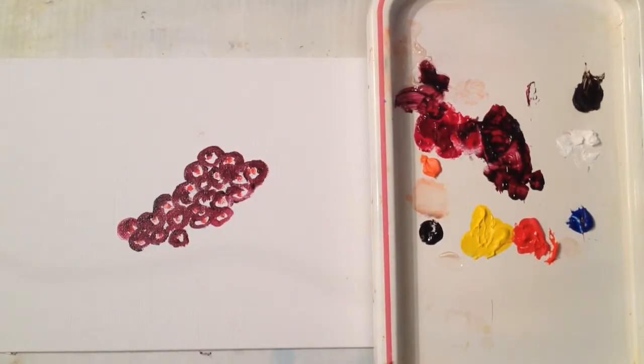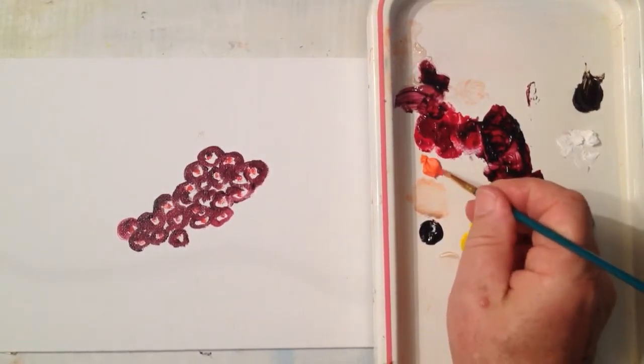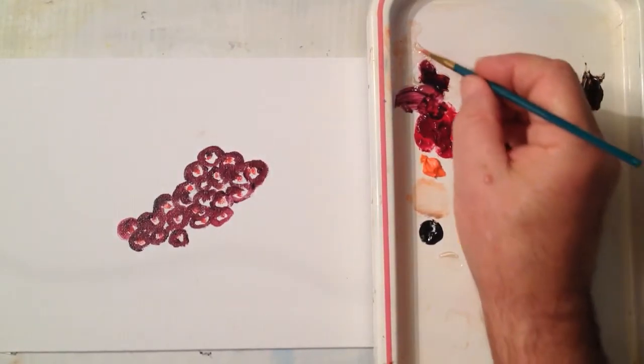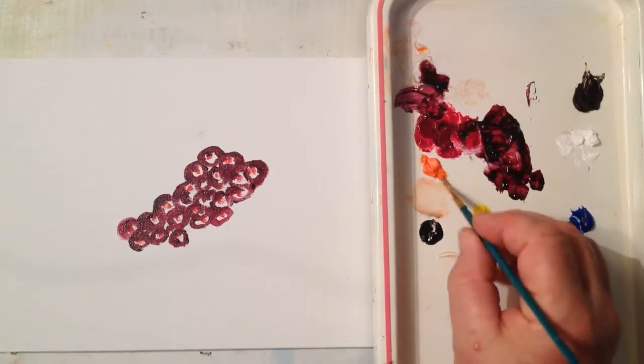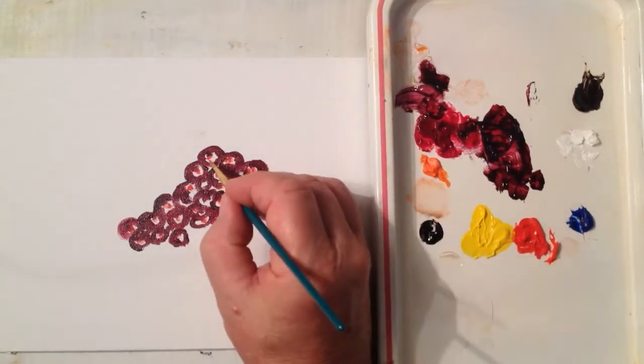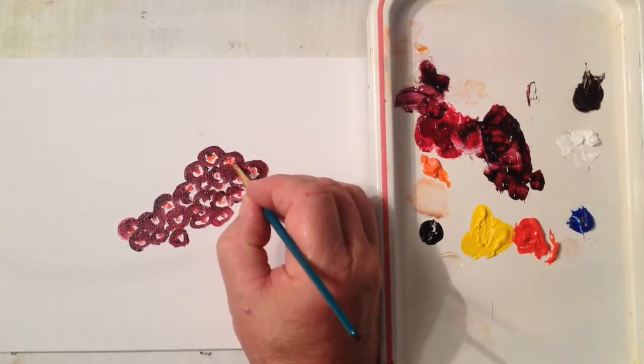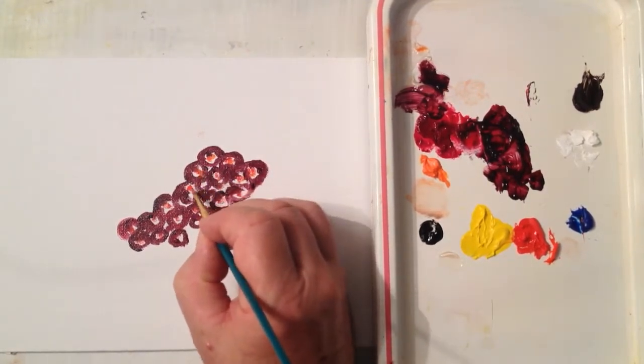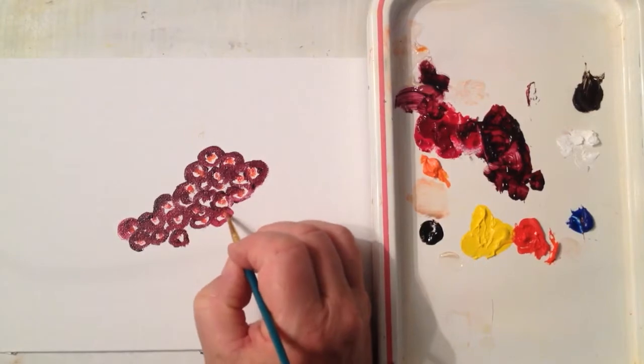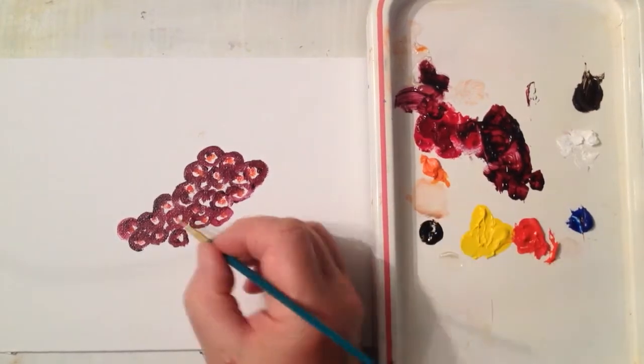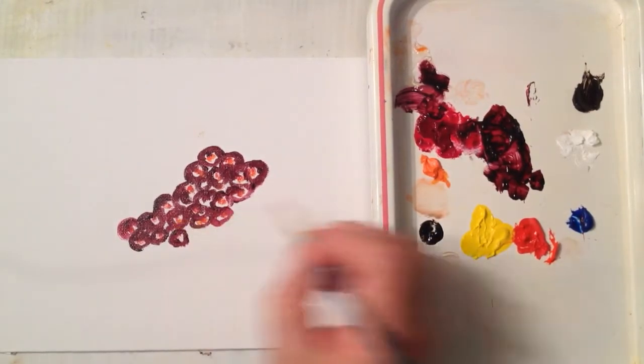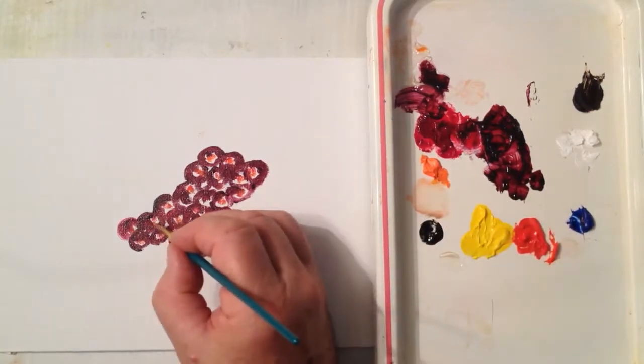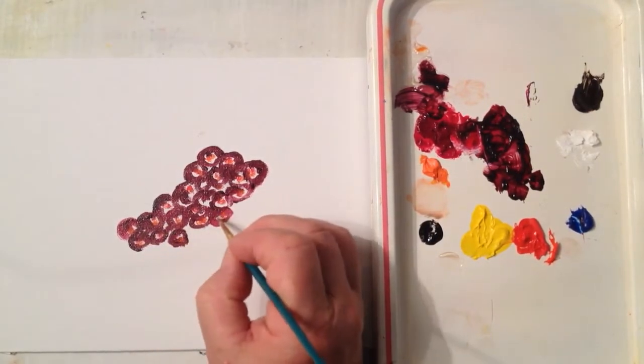The next color that you're going to add, you're going to add Cad Orange, just underneath that red that you just put in. Now what we're building is a translucent grape, meaning that the light comes in on the dark side of your grape and escapes the grape on the light side.